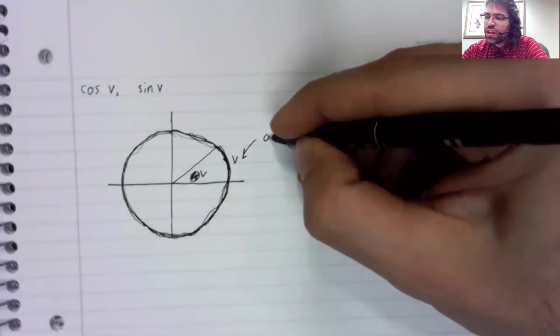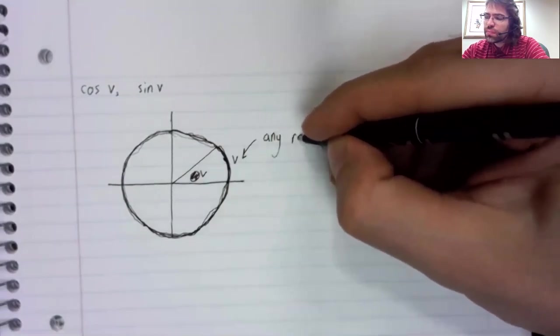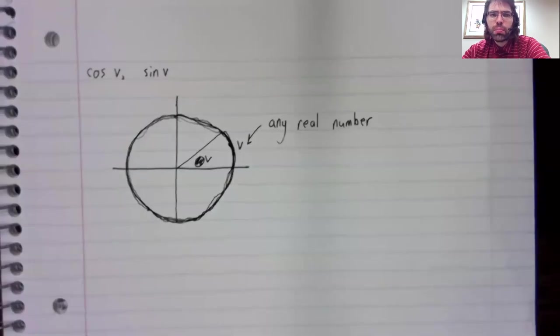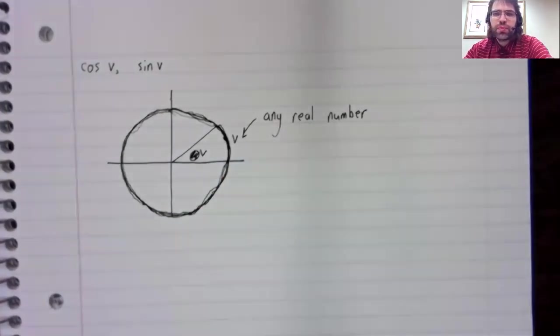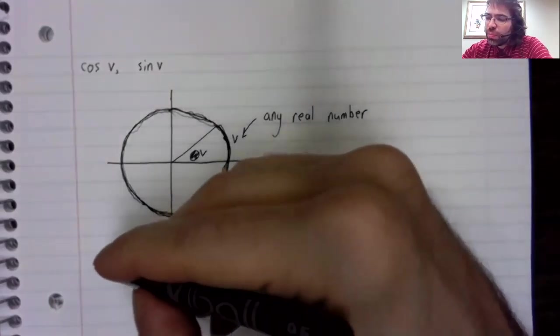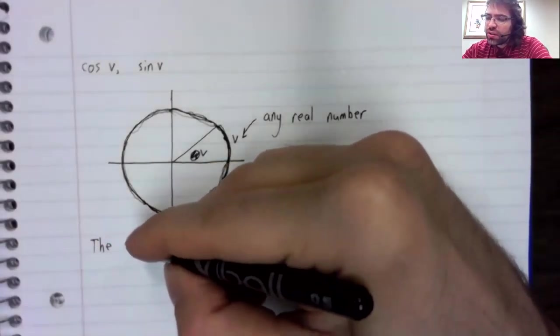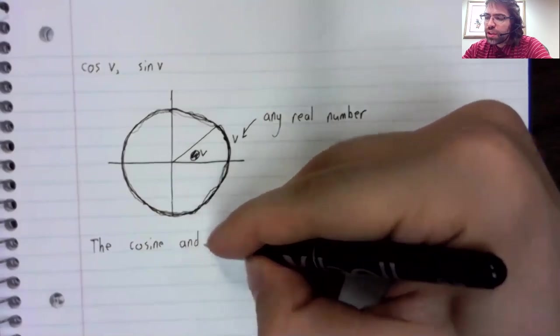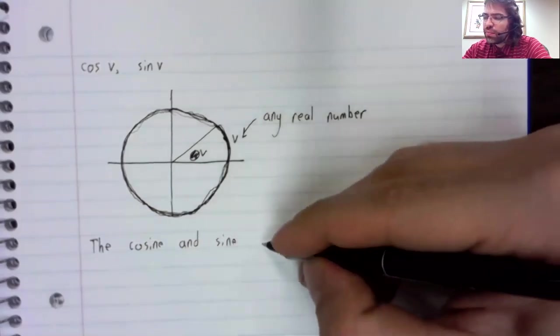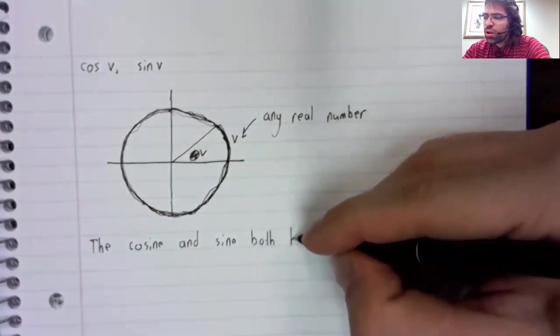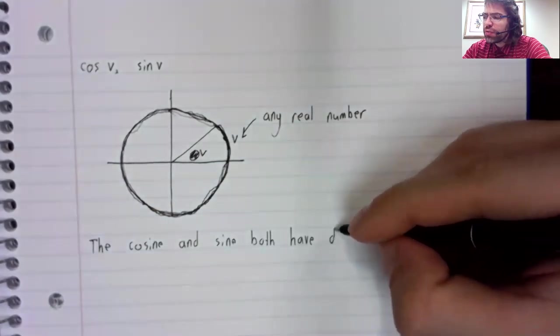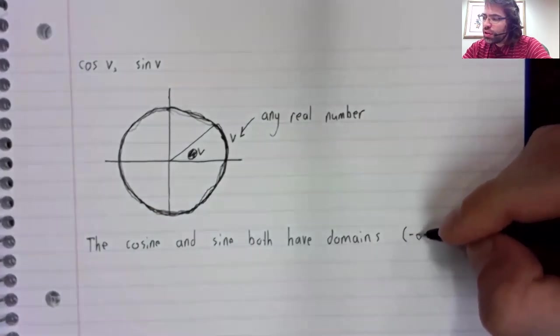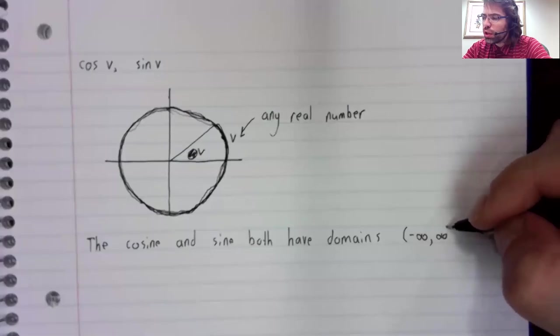So this v can be any real number, and stated in terms of the domain, the domain. This says that the cosine and the sine both have as their domains the set of all real numbers.